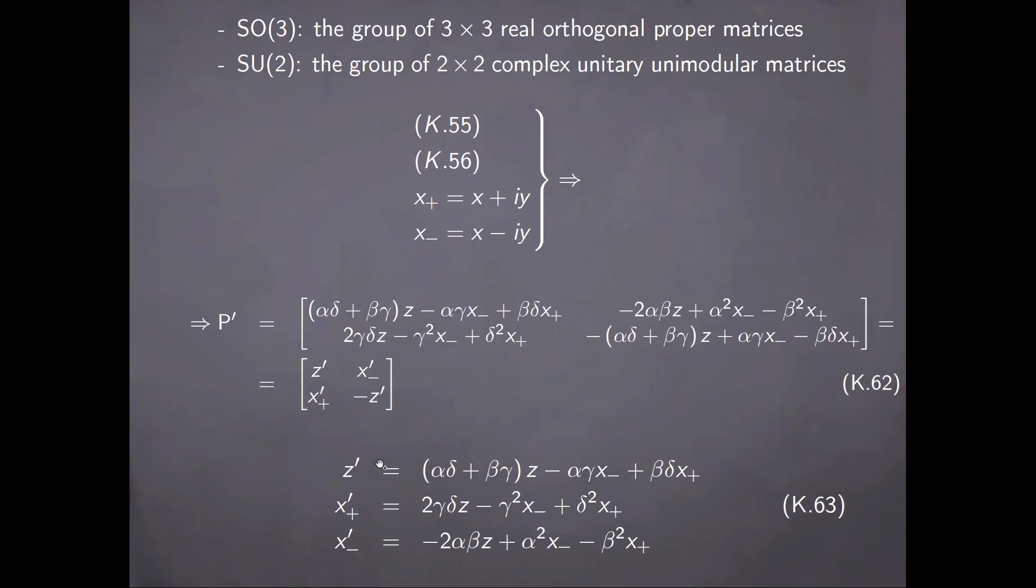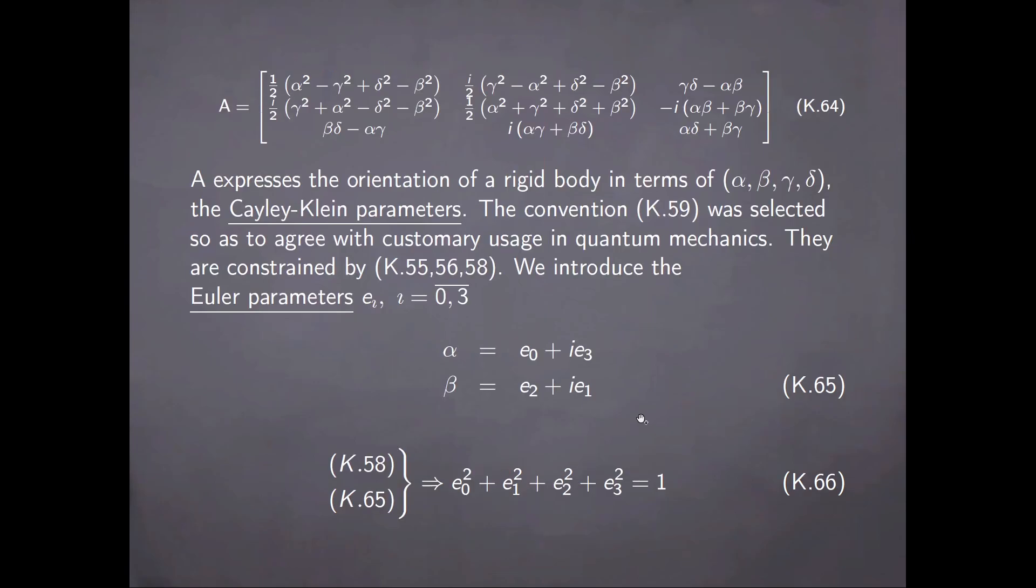Therefore, from this set of conditions, we can solve the last two equations in such a way so as to have the primed coordinates of the vector on the left-hand side and the unprimed coordinates on the right-hand side. And then we can immediately write the proper orthogonal matrix of this transformation in the form shown here.